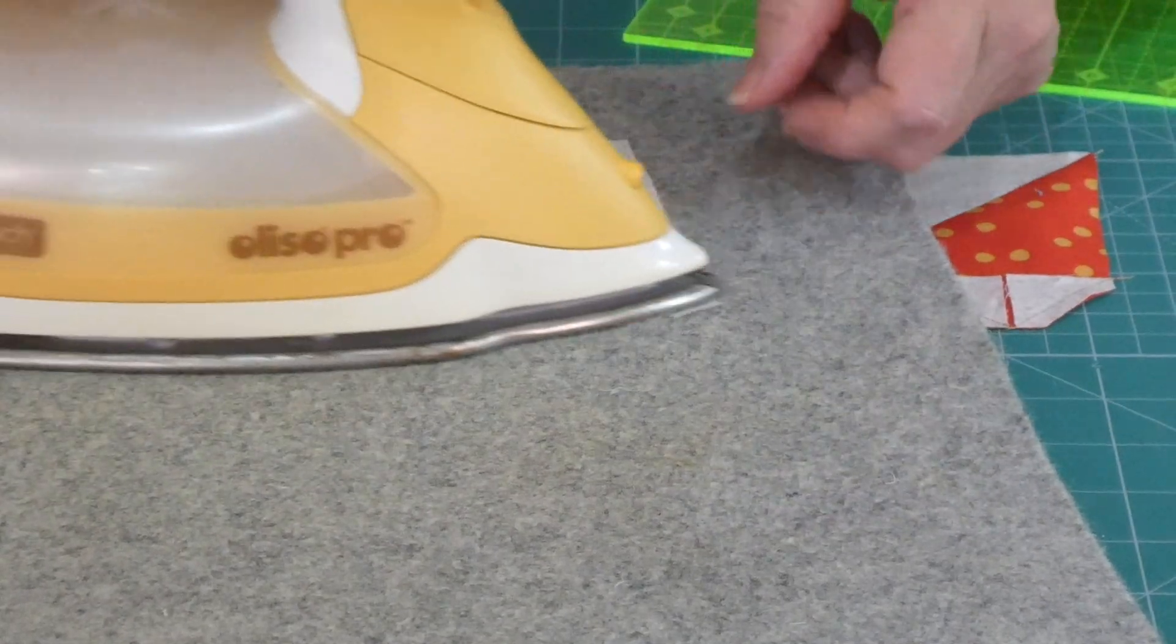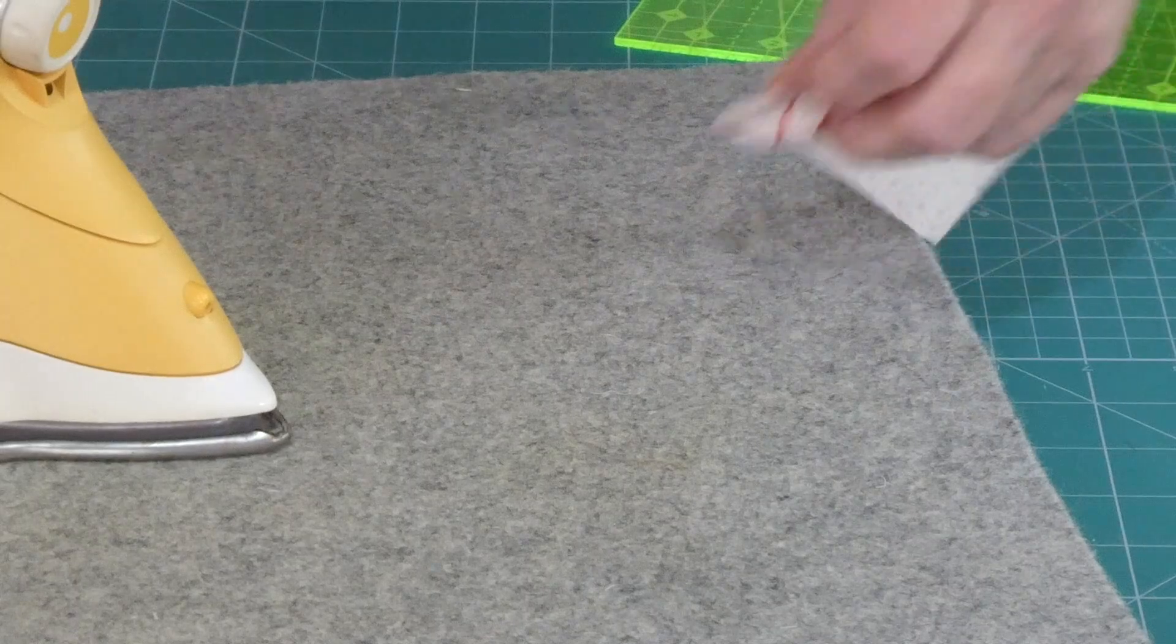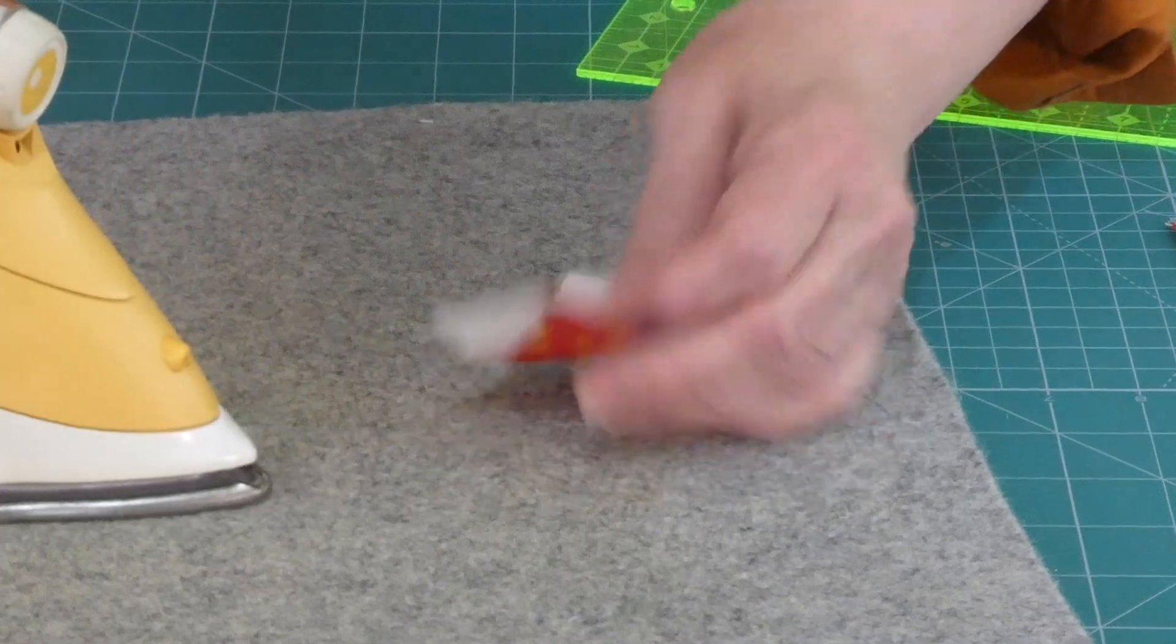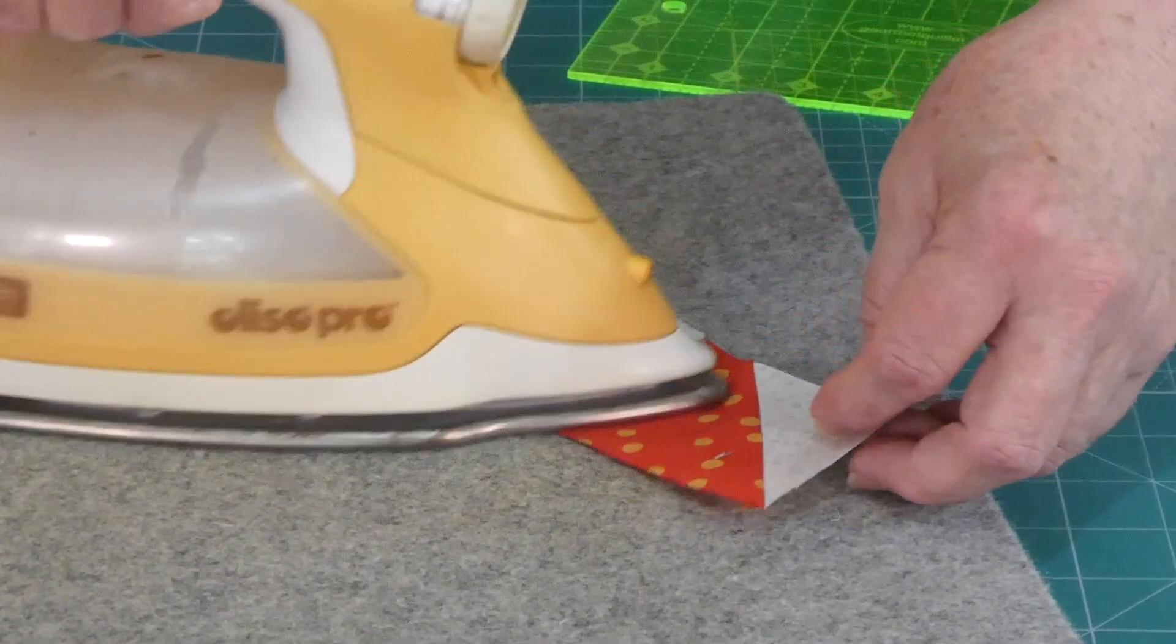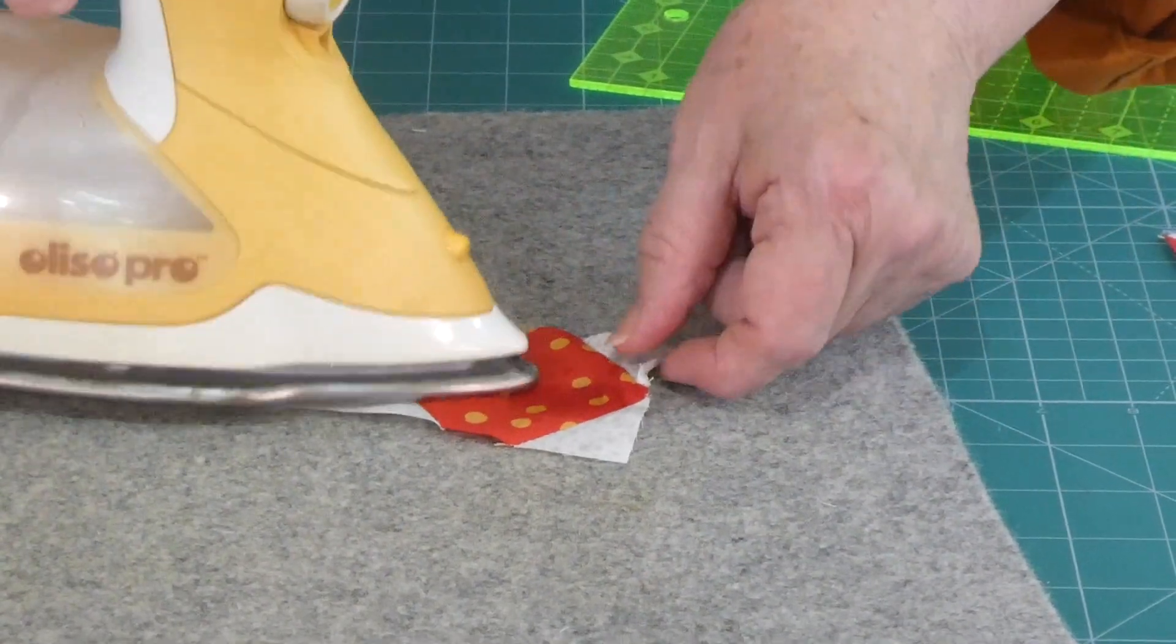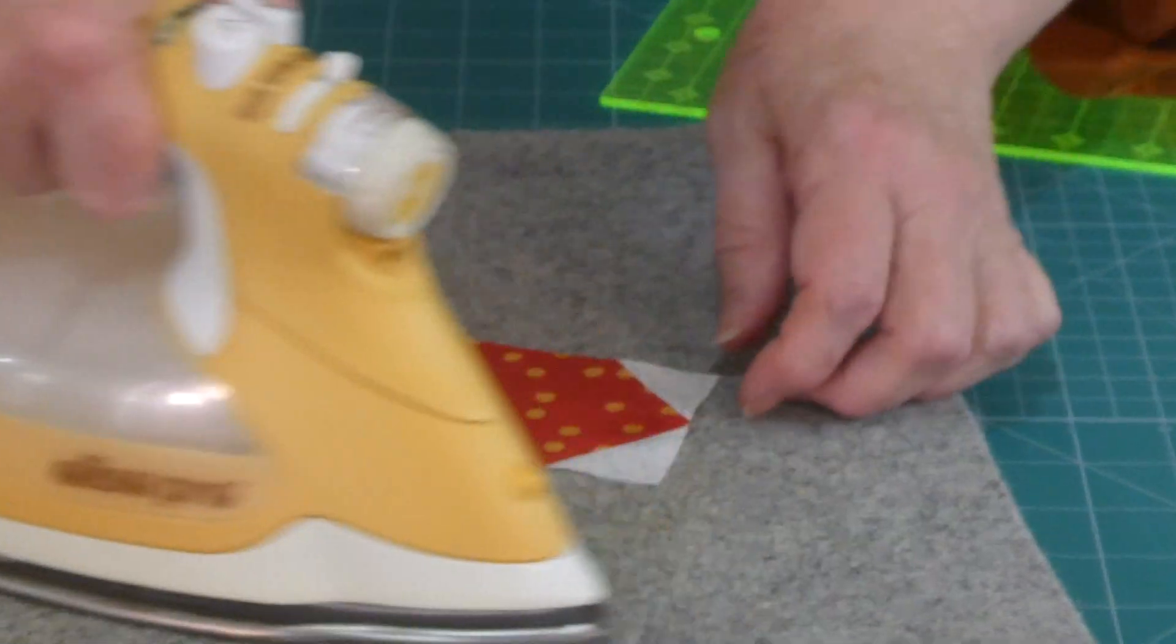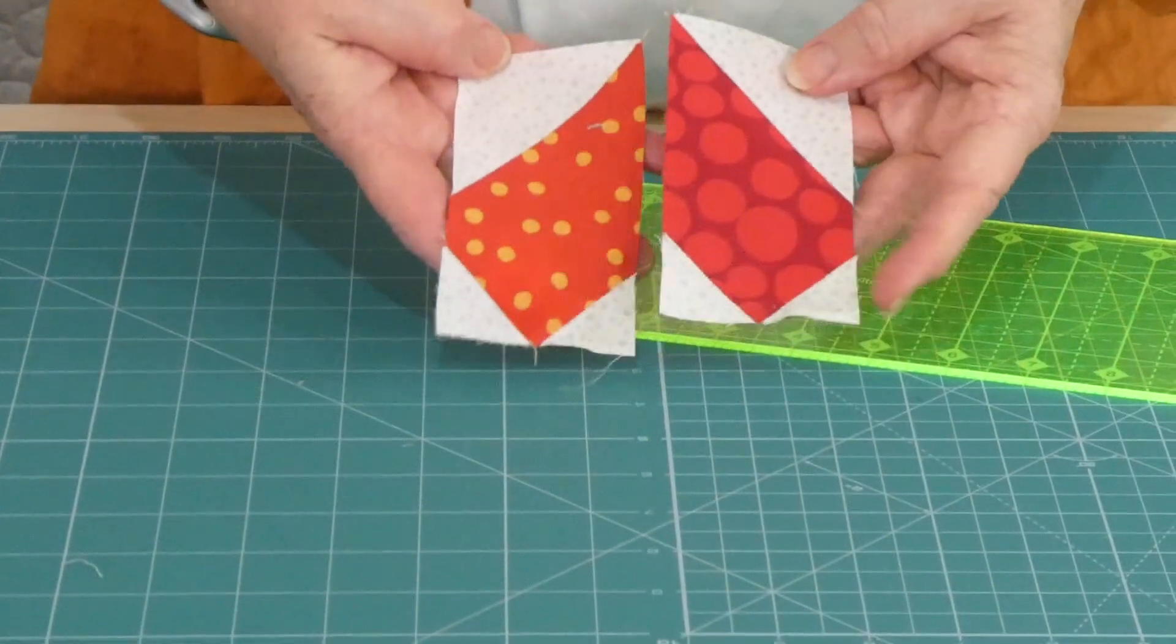We could do stripy hearts and dotty hearts and flowery hearts and hearts with cats on. There's so many things you can do. We're so fortunate with all the fabrics that we have available these days. So now we've got two halves of a heart.